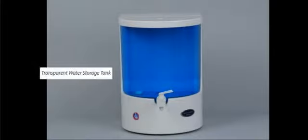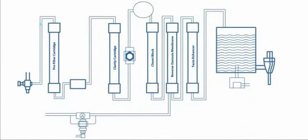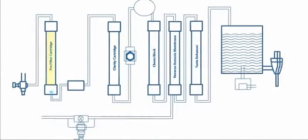It has a transparent water storage tank, automatic water level sensor and a dual flow tap. Water first goes through the inlet to the pre-filter cartridge.